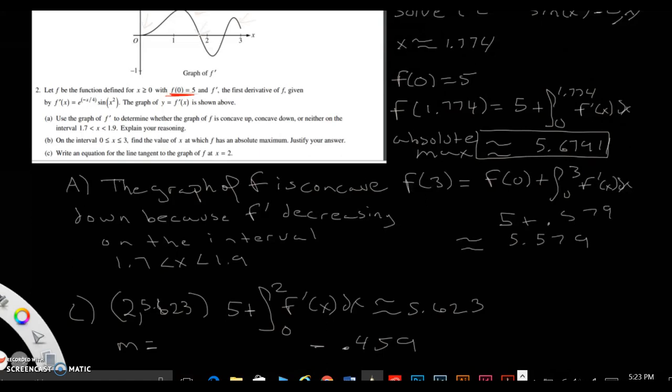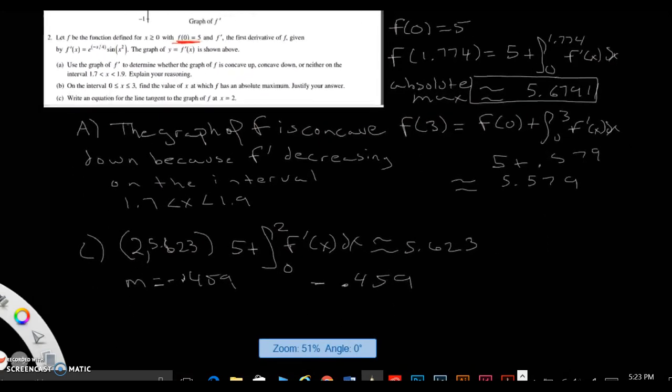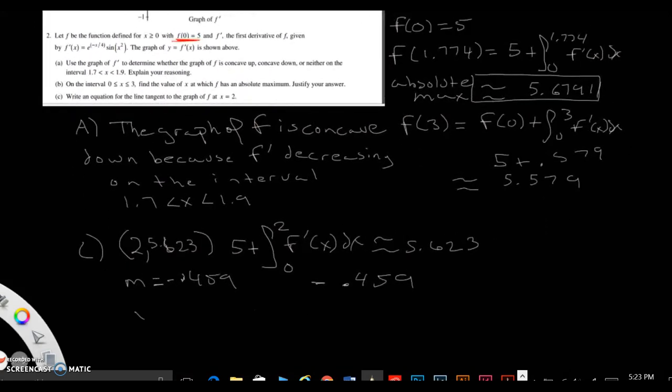So now the last thing we have to do is just write it as an equation. So that's pretty easy. Let me just write that down over here. So now we got to use the form y2 minus y1 equals m parenthesis x minus x2. So y minus the 5.623 equals the negative 0.459, very important that you put that in parenthesis, times x minus 2. And that should be your equation. Or you can move over the 5.623 by adding it. But I would say just leave it like that. And I hope this video helps. And I'll see you next time.